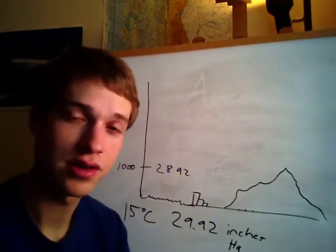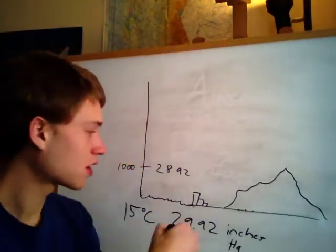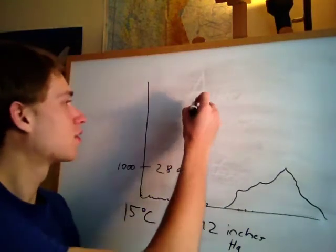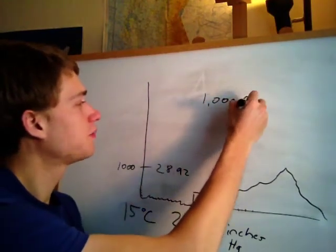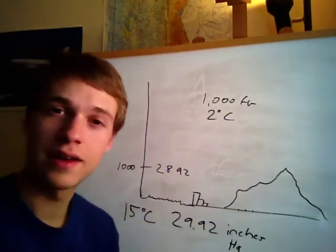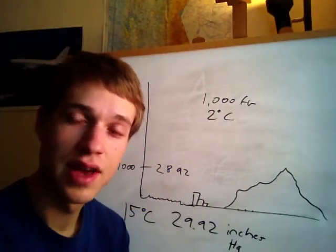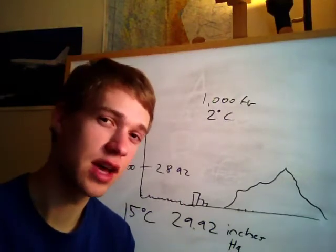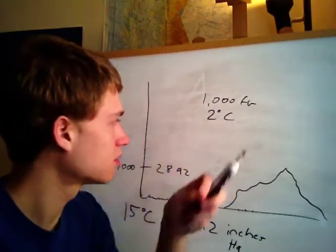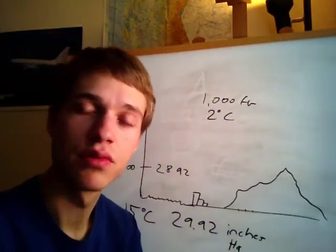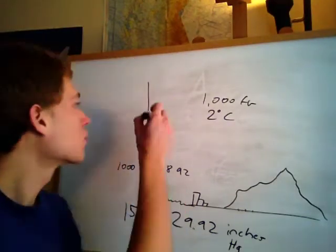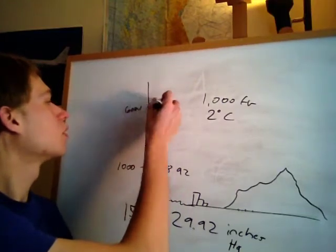As you start going up higher, the standard lapse rate for temperature is 2 degrees Celsius for each thousand-foot increase in elevation. So if it's a standard day at sea level — 15 degrees Celsius — and we go up to Lake Tahoe at about 6,000 feet, that's a 12-degree temperature change, meaning it would be 3 degrees Celsius up at Lake Tahoe.